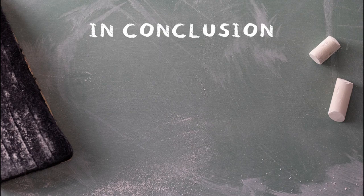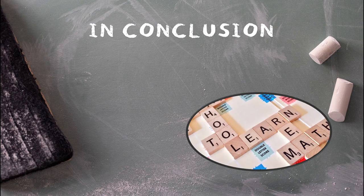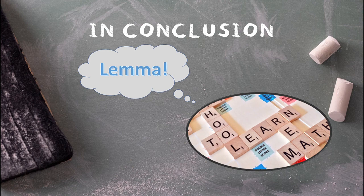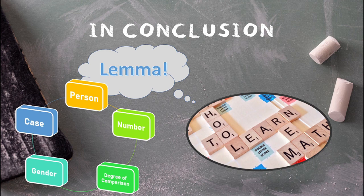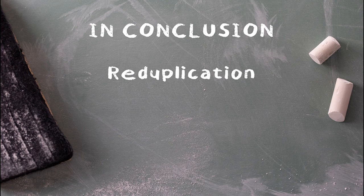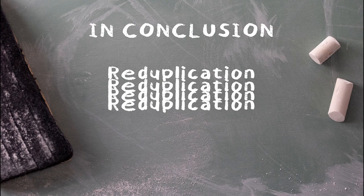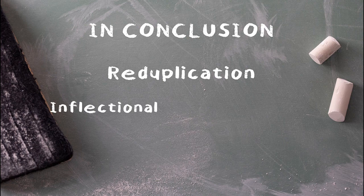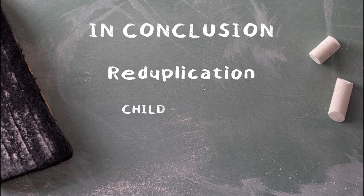To conclude, inflectional morphology is all about the creation of word forms that retain the semantic information of the lemma while also containing grammatical information relative to the sentence. Here we've only talked about affixation as a method of inflection, but others do exist. For instance, reduplication — the repeating of a word — can also be used for inflection. In Thai, reduplication is used extensively in both derivational and inflectional morphology. For example, it can encode grammatical number, as in 'dek,' which means 'child,' and 'dek dek,' which means 'children.'